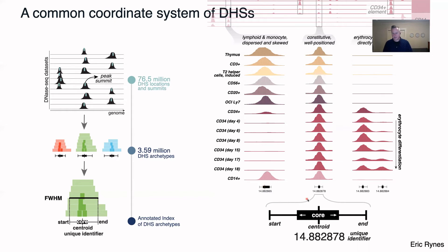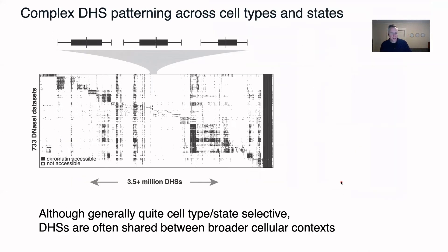We further assign several quality scores and confidence metrics to these elements, as well as a unique identifier that generally tells you where the element is in the genome. For instance, this element is on chromosome 14, roughly 88% of the chromosome length, and the identifier number also roughly tells you about the general density of other DHSs in that area. So it's actually an interpretable identifier.